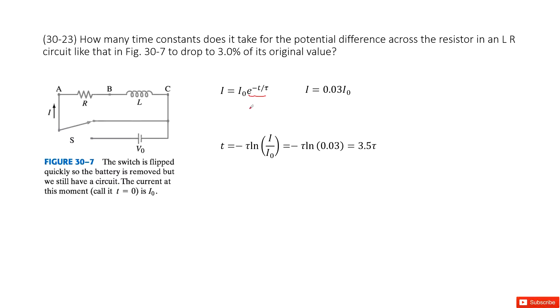And then we see this is RC decay. And it tells you that finally this current will drop to 3% of its original value. So we can write I equal to 0.03 I naught, right?